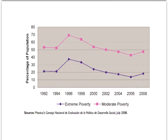Even though income in Mexico hasn't converged to that of the U.S. and Canada, research has found that NAFTA has improved other indicators of development in the country. This figure charts the percentage of people living in extreme and moderate poverty. The currency crisis in 1995 significantly increased extreme and moderate poverty. Rates improved in subsequent years but didn't reach 1994 levels again until 2002. The percentage of people in the extreme poverty category went from 24% in 2000 down to 14% in 2006, but the financial crisis pushed poverty back up to 18% by 2008.